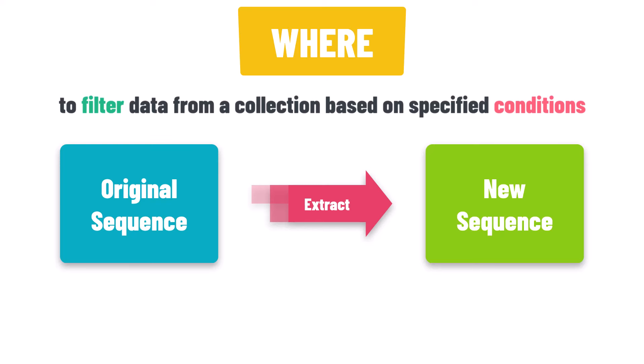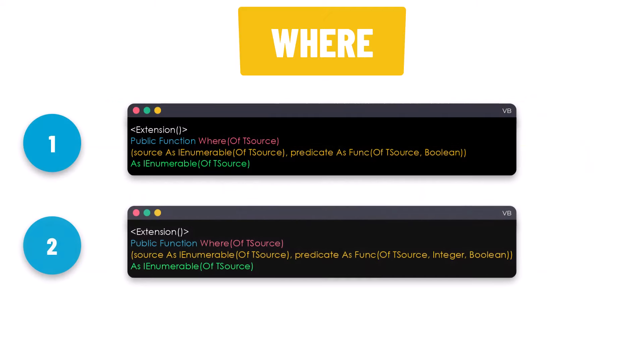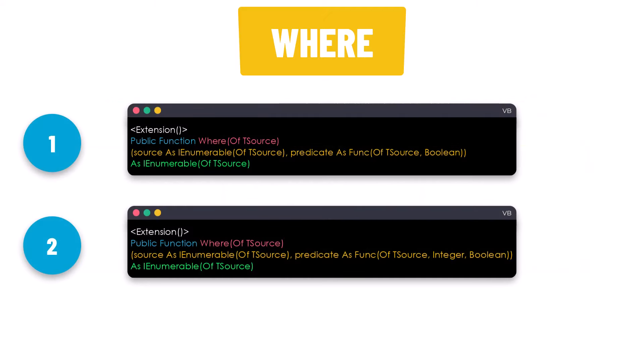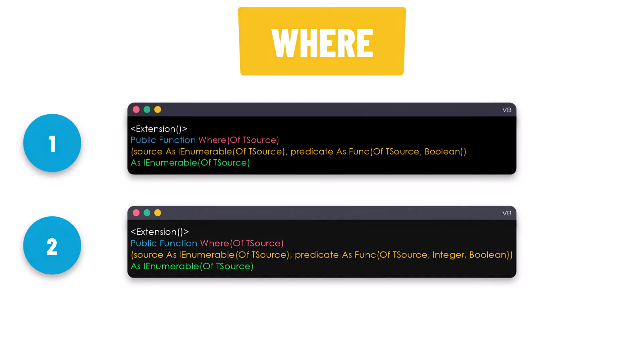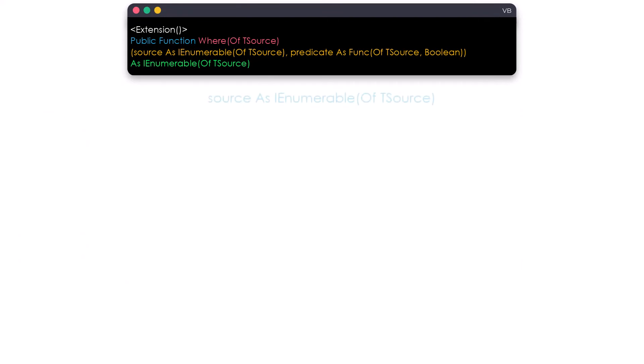Let's now check the different overloads of this method. The WHERE method has two overloads. Starting with the first one — as input we have a sequence which we want to filter.